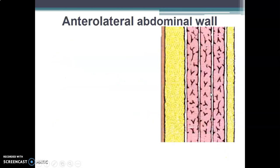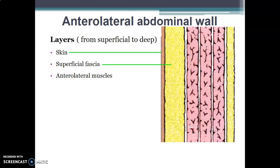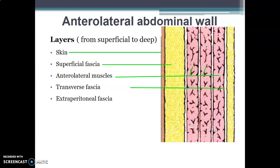So the order of the structures on the anterior abdominal wall from superficial to deep is: skin, Camper's fascia (fatty), Scarpa's fascia (fibrous), external oblique, internal oblique, transverse abdominis muscle, and finally fascia transversalis. Deep to the fascia transversalis is extra-peritoneal fascia, before you reach the peritoneum housing the abdominal organs.